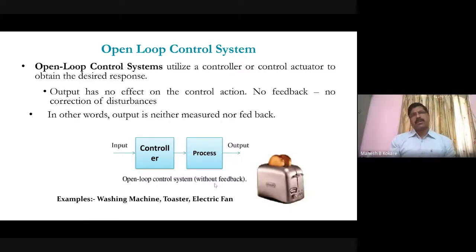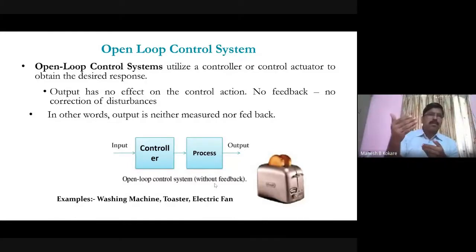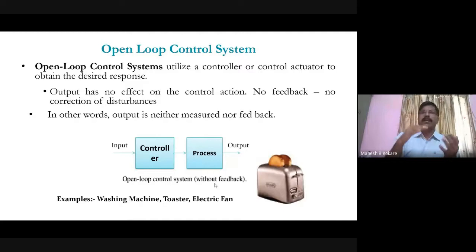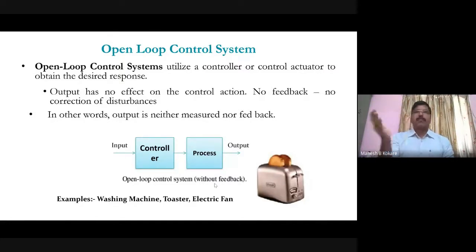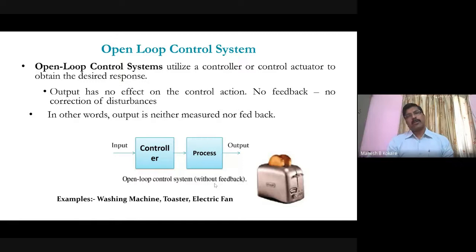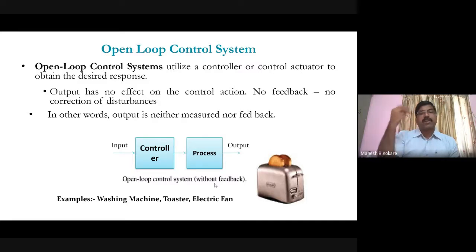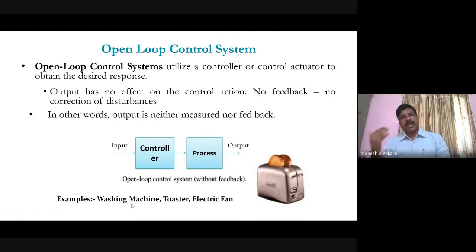Another example is a traffic light — it operates on an open-loop system where the signal is red for a fixed time (say 60 seconds), then green for one minute, regardless of whether there is traffic or not. There is no sensing of traffic density, so there is no feedback. An electric fan is also an open-loop control system because we don't measure the speed or how much temperature it maintains. Even a toaster is an example of an open-loop system.